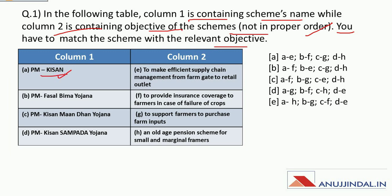Scheme one is PM Kisan or PM Kisan Samman Nidhi Yojana — under this scheme rupees 6000 per annum is provided to farmers to support purchase of farm inputs. PM Fasal Bima Yojana is a crop insurance scheme which provides insurance to crops of farmers. PM Kisan Maandhan Yojana is a social security scheme providing pension to farmers in their old age. PM Kisan Sampada Yojana is to make efficient supply chain management from farm gate to retail outlets.